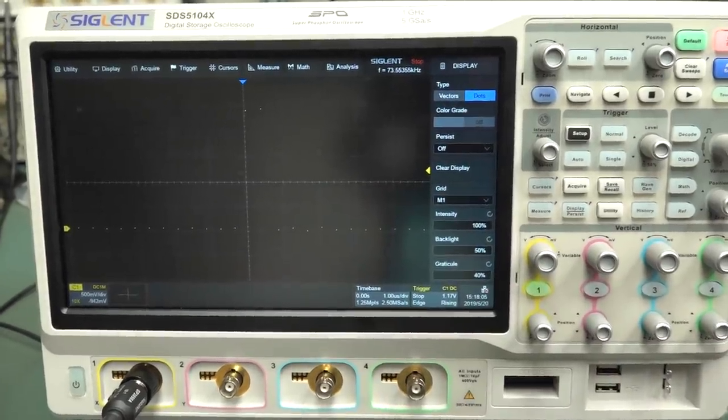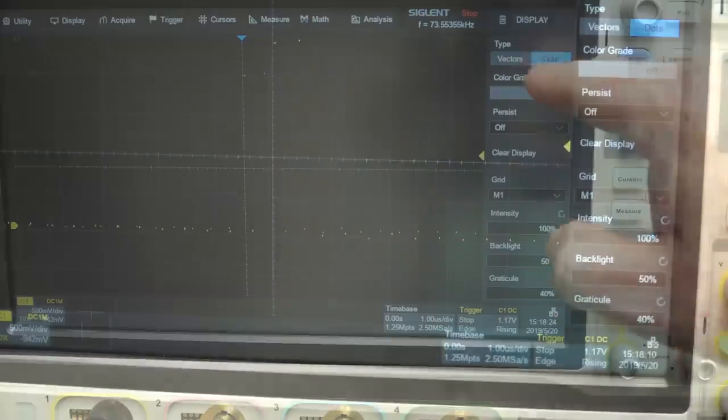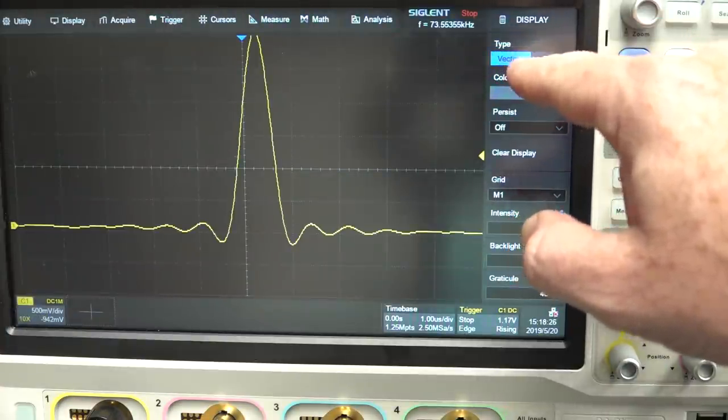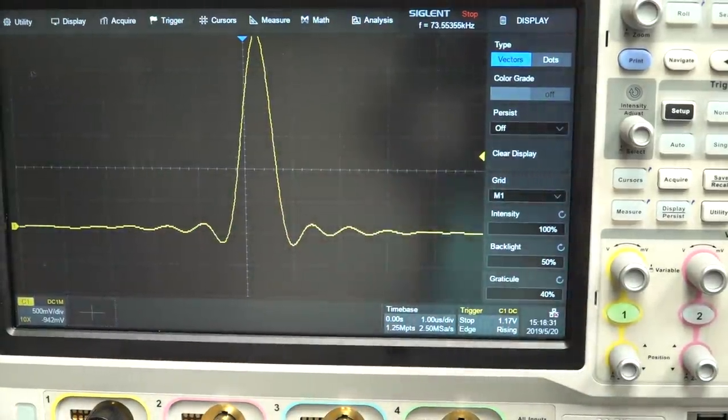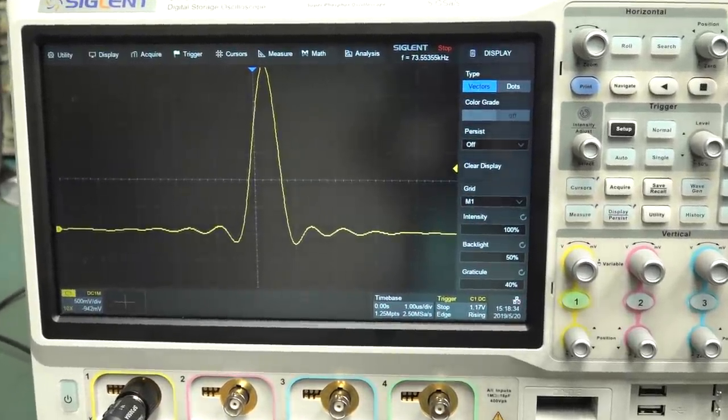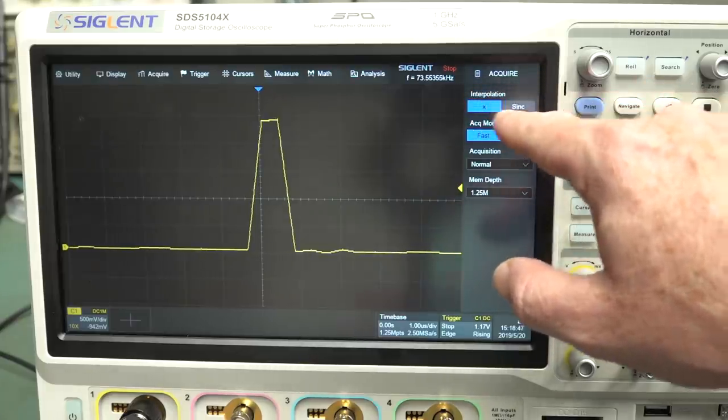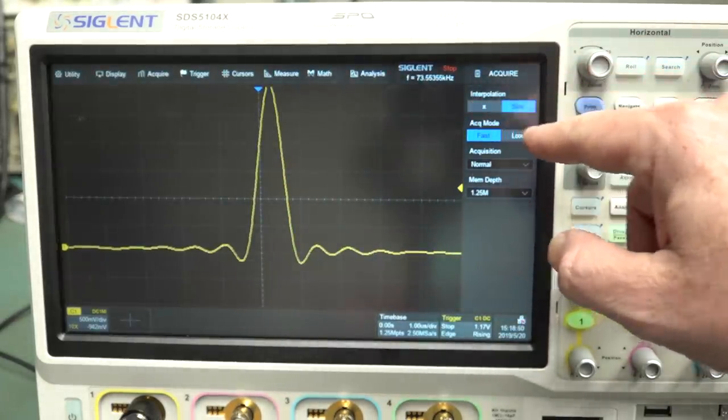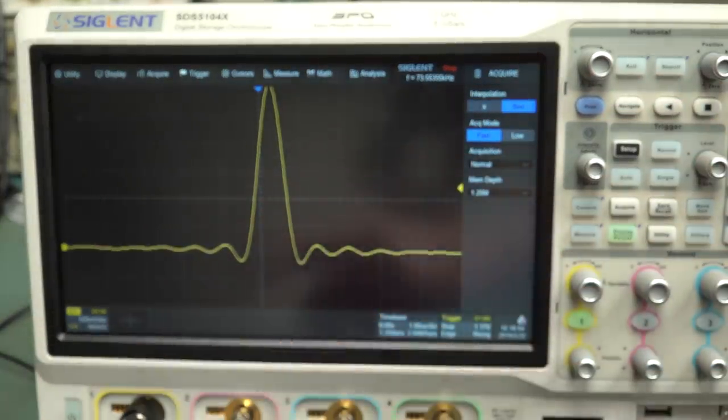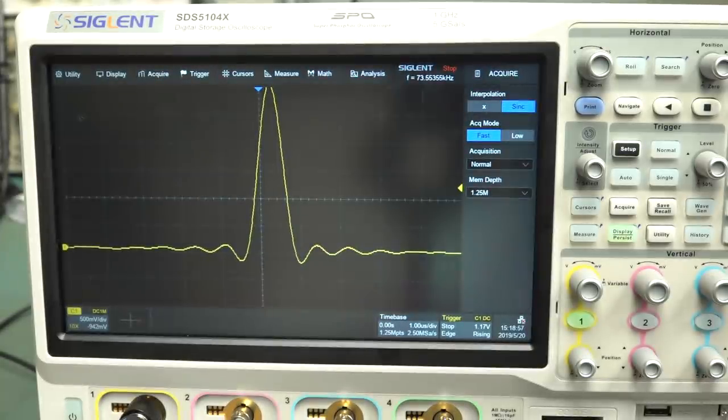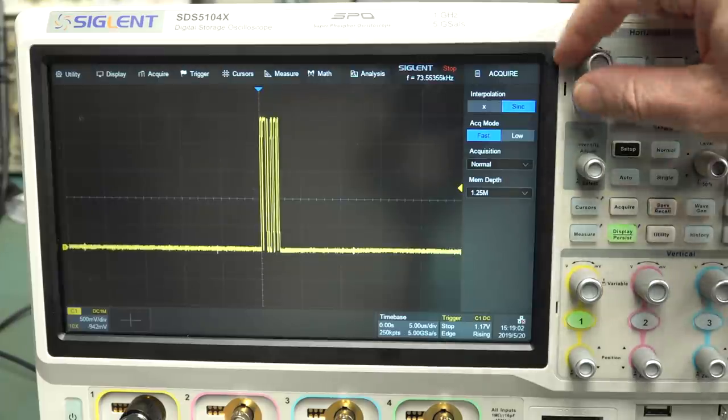And we can see that if we actually go over to our display menu and choose instead of vectors, which basically just joins the dots, so to speak, we can go dots here. And you can maybe see, might be a bit hard, but you can see the individual sample dots in there. So how does it go from those dots to an interpreted display like that? Well, it's actually doing what's called interpolation.